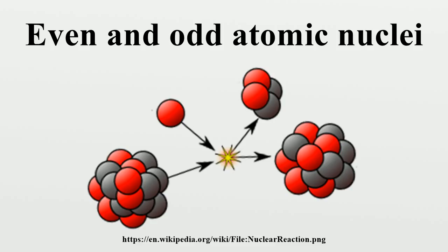Odd mass number: For a given odd mass number, there are few beta-stable nuclides, since there is not a difference in binding energy between even-odd and odd-even comparable to that between even-even and odd-odd, leaving other nuclides of the same mass number free to beta decay toward the lowest-mass nuclide. For mass numbers 5, 147, 151, and 209+, the beta-stable isobar of that mass number can alpha decay. This gives a total of 101 stable nuclides with odd mass numbers.